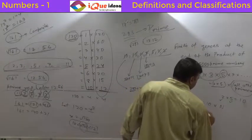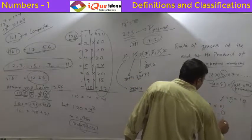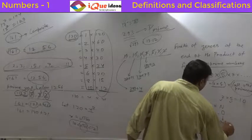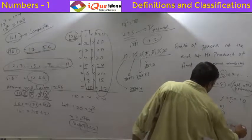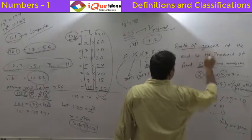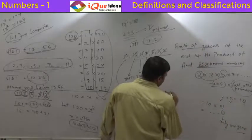So 10 into n, whatever it is, there will be only one 0 in the end. So the answer is 1. What was the question? Number of 0. So the answer is 1.